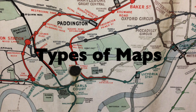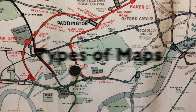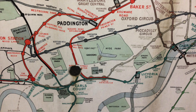One of a geographer's main resources or tools they can use to gather information is a map. There are many different types of maps a geographer can use. Which map they use will depend on what information they need. Selecting the correct map or tool for the job is important.